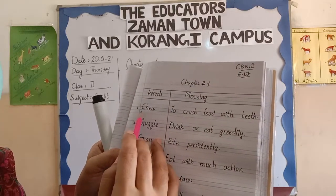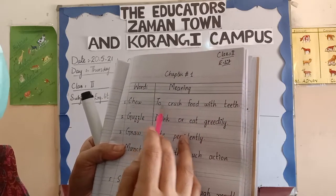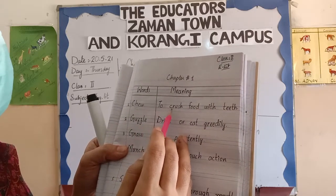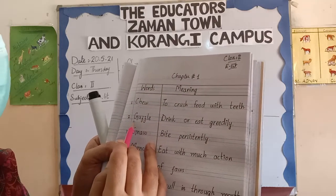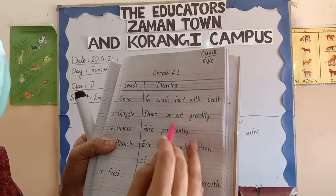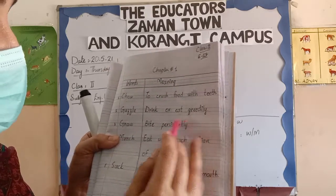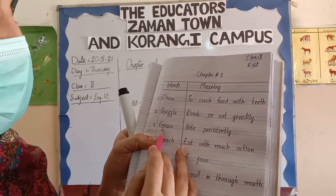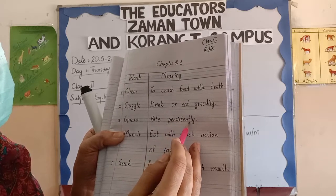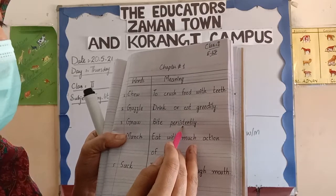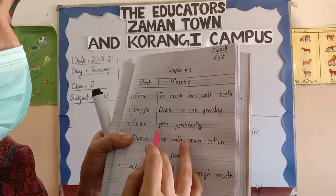Number 1: Chew. The first word is Chew. Chew means to crush food with teeth — you grind food with teeth. Number 2: Gnaw. Gnaw means bite persistently. Bite persistently — this is difficult, but when you try it again and again you can easily pronounce this word. Bite persistently.